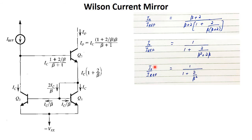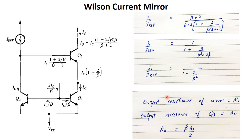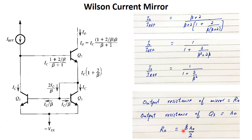We have solved the first problem of the basic current mirror — I-out is now less dependent on β. For output resistance: if capital R0 is the output resistance of the entire Wilson current mirror and small r0 is the output resistance of only transistor Q3, where r0 = VA3/IC3, then the output resistance of the whole Wilson current mirror is R0 = β × r0 / 2.